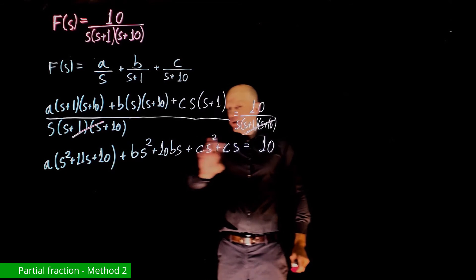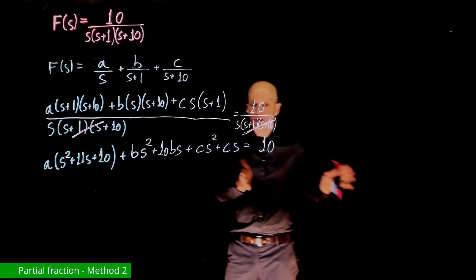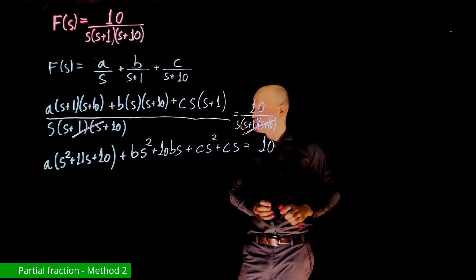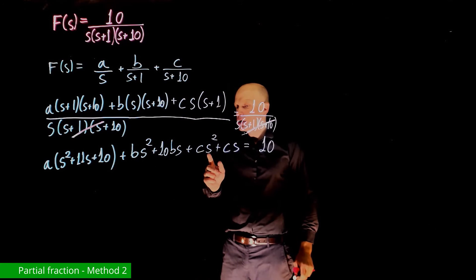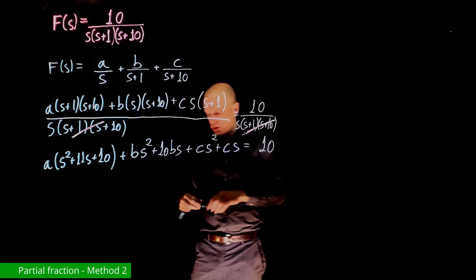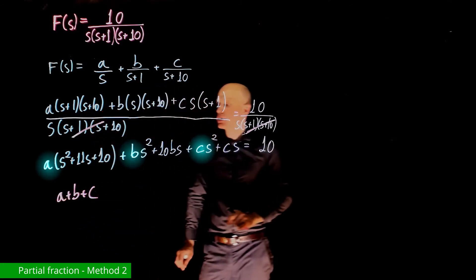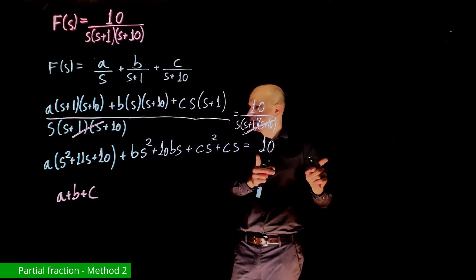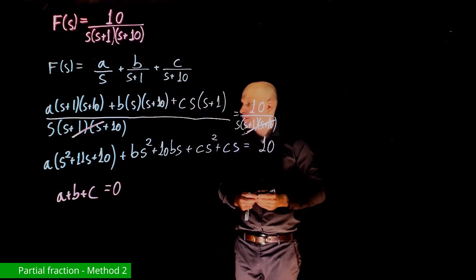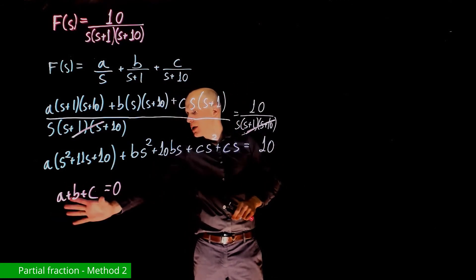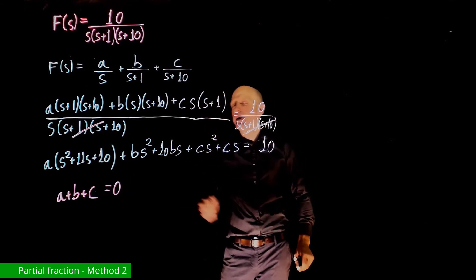Factoring all powers of s on the left side and equating coefficients with the right side: for s², the coefficient is (a+b+c), and since the right side has no s² term, a+b+c = 0.